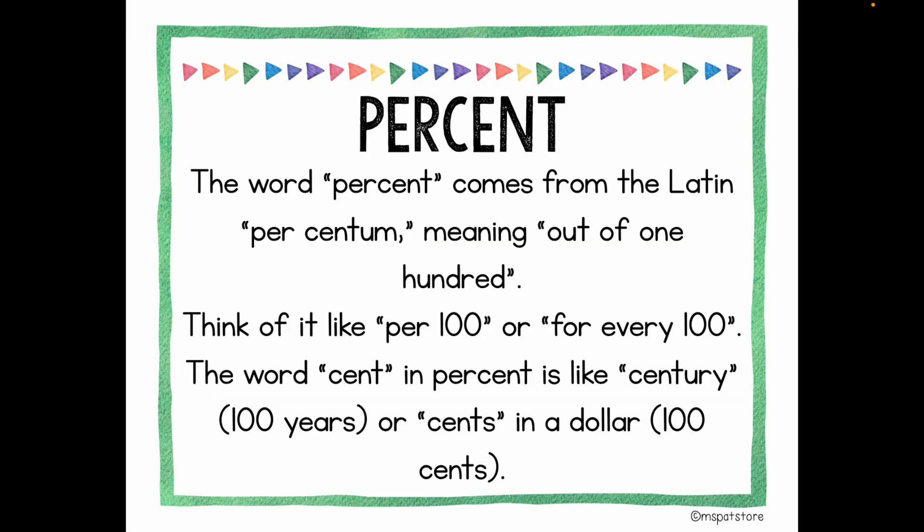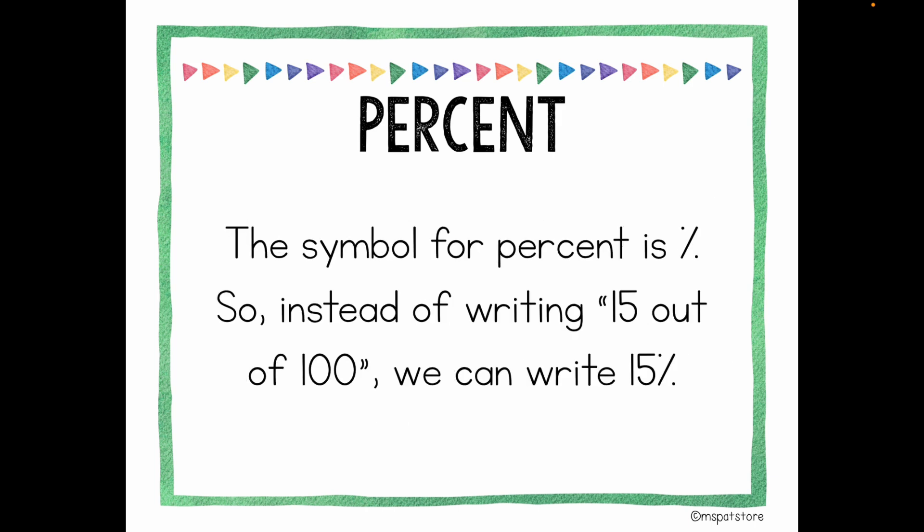Let's take a look at this. Percent. The word percent comes from the Latin percentum, which means out of one hundred. I'd like you to think about it as per hundred or for every hundred. The word 'cent' in percent is like a century, which means a hundred years, or cents in dollars, which is a hundred cents. The symbol for percent is this one, so instead of writing 15 out of a hundred, we can write 15 and then the percent symbol.